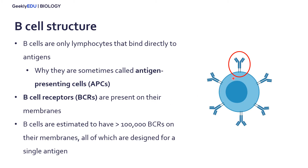BCRs are basically the B cell's own version of an antibody, which is built into its cell membrane. B cells are actually estimated to have over 100,000 BCRs on their membranes on average. It's important to note that all of the BCRs on a single B cell are designed for a single antigen — you won't get on one cell a BCR for one virus and then a BCR for another. All the BCRs on a single cell will be designed for a single pathogen.